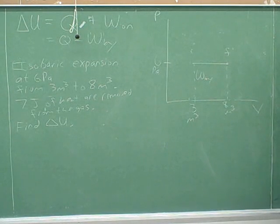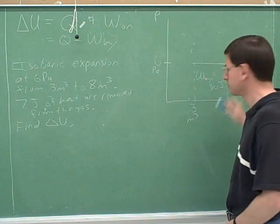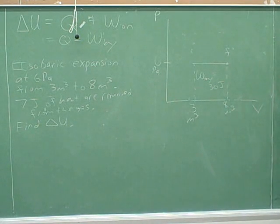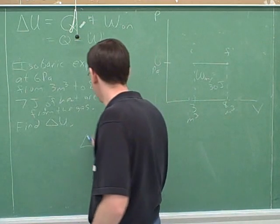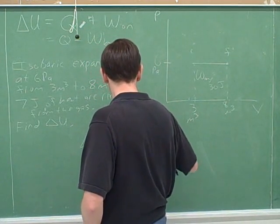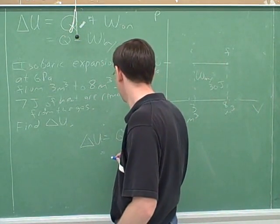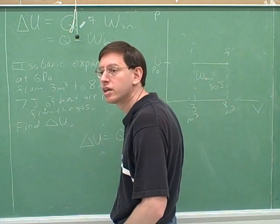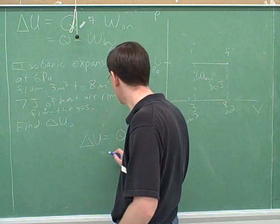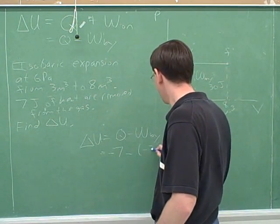What if it's 5 times 6, so that's 30 joules? So W is 30 joules. Good. And then delta U equals Q minus... Negative what? Negative 7. Good. Minus negative 30. Like this?